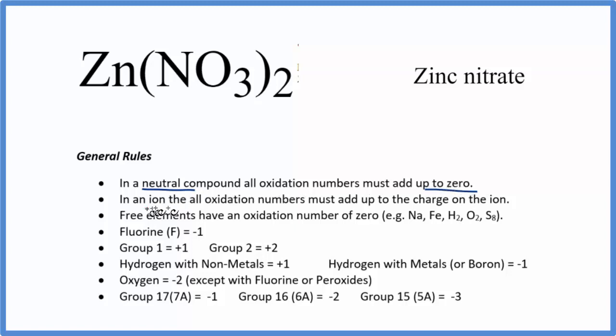We can also see if we have an ion, all the oxidation numbers will add up to the charge on the ion. This is the nitrate ion, which you should recognize. Nitrate ion has a minus one ionic charge, so these oxidation numbers are going to add up to minus one.